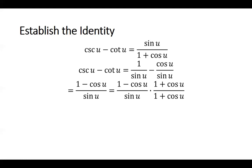Now I see that I want 1 plus cosine u in my denominator — looking back at the original identity, the right-hand side is sine u over 1 plus cosine u. That happens to be the conjugate of 1 minus cosine u. So I'm going to multiply the top and bottom by 1 plus cosine u. On the top, that's a difference of squares: 1 squared minus cosine squared u. On the bottom, I get sine u times 1 plus cosine u.